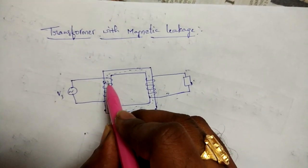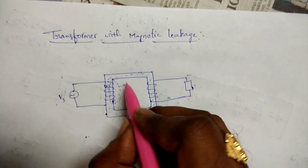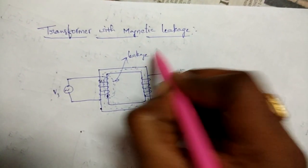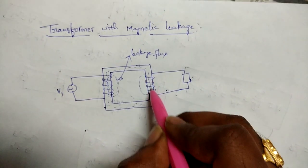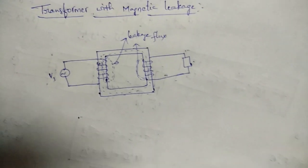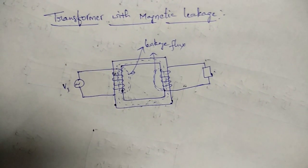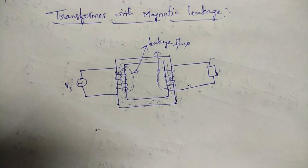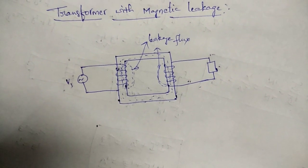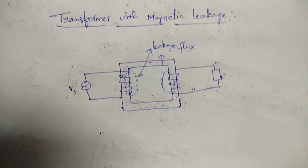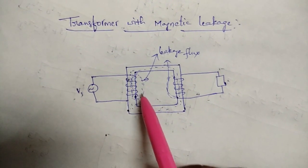The remaining 5% will complete its path through air — this flux is called leakage flux. Similarly, in the secondary winding there is also a leakage flux. This leakage flux does not have any role in transferring power from primary to secondary. Only the 95% of the flux which is linked to both windings has a role in transferring power from primary to secondary.